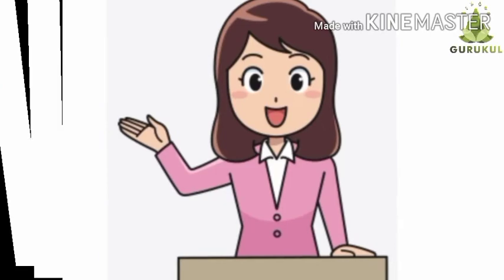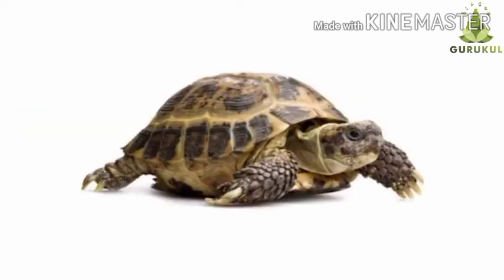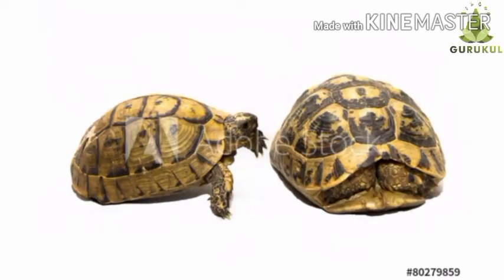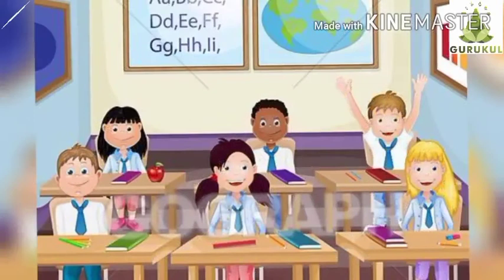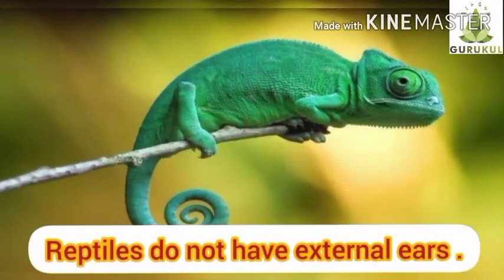Reptiles have dry skin with scales or shells on them. For example, the tortoise's skin is covered with a shell, and many times the tortoise hides itself inside it to protect from danger. Reptiles breathe through their lungs. They do not have external ears like human beings.